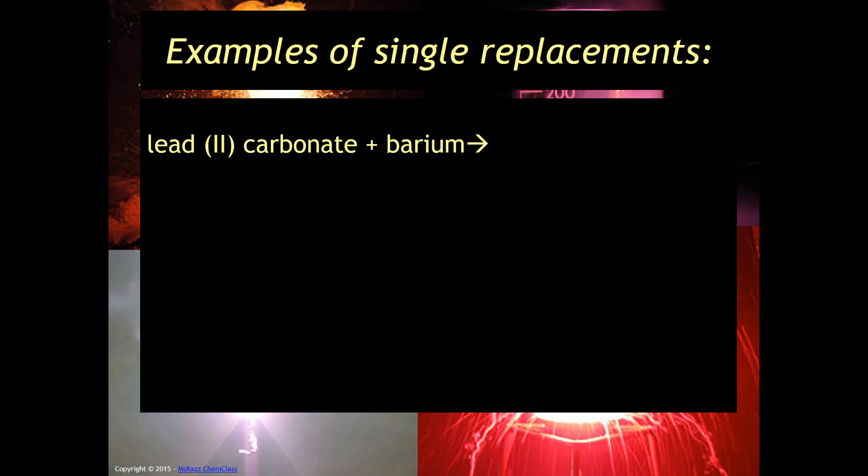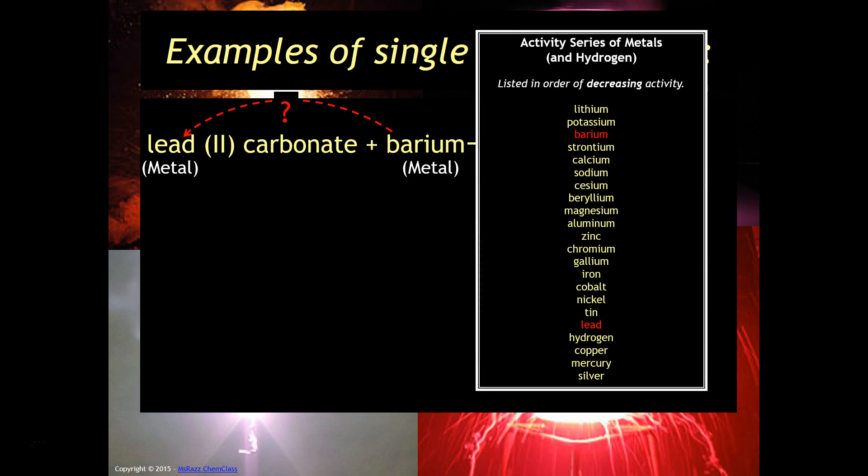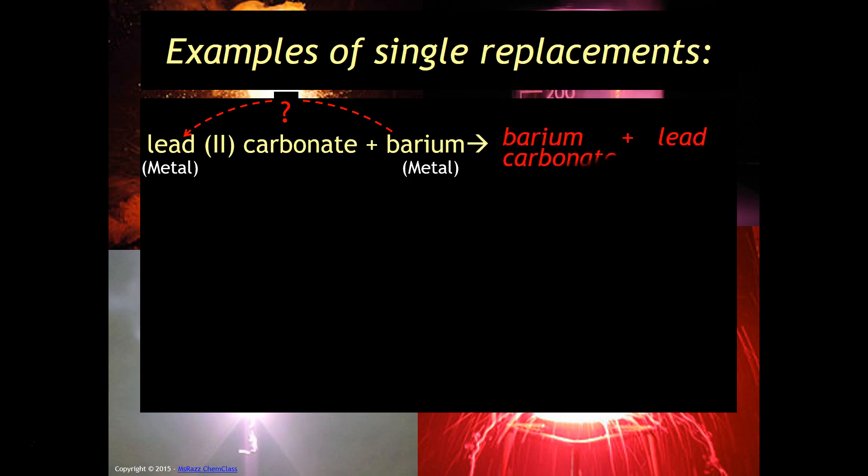Let's look at this one, lead (II) carbonate and barium. So we've got our metals. We're going to check to see if they can replace each other. You can see that barium is the thing that's by itself. That has to be more reactive than the thing that's in the compound it's replacing. This is, in fact, going to happen because barium is more reactive. And so you would get barium carbonate plus lead. Notice, though, that I don't need a Roman numeral for the lead. And the reason why is because lead is now an element. You only need the Roman numeral if it's in a compound.